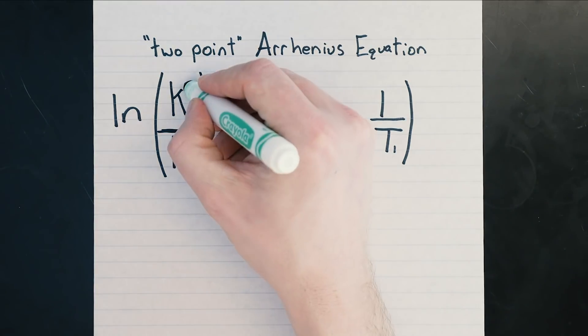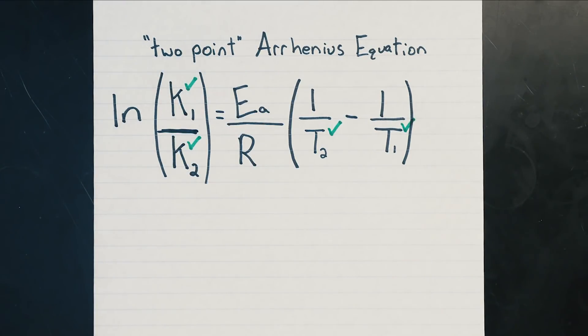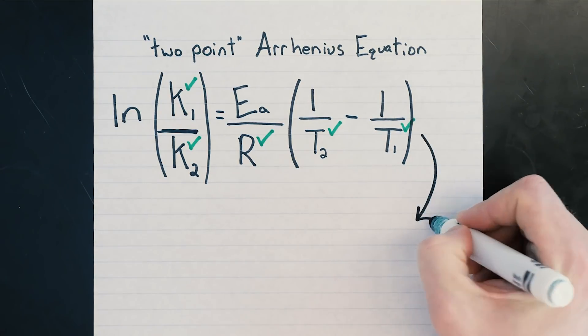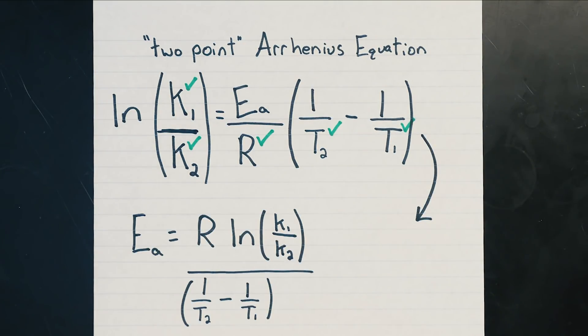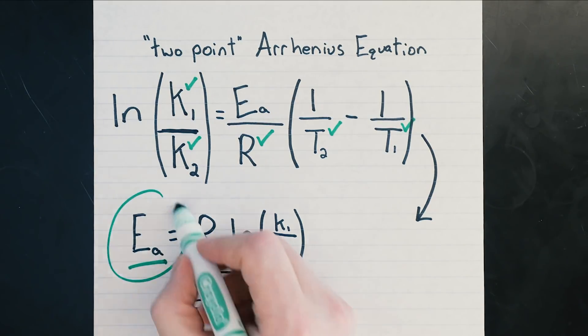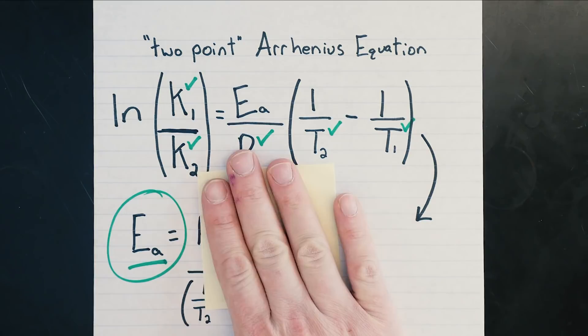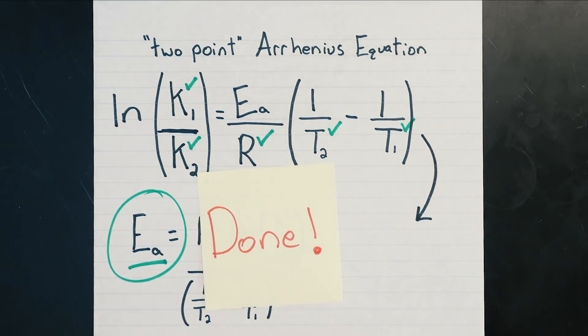Since you now know two values for k, the temperatures for each, and the gas constant, we can just manipulate the formula and plug in our numbers to solve for the activation energy. And we're done. Thank you.